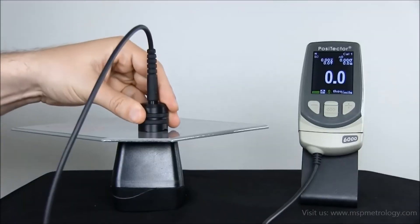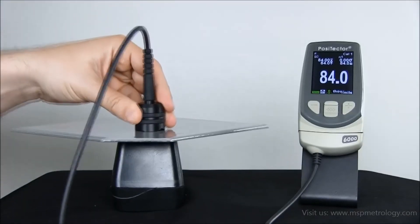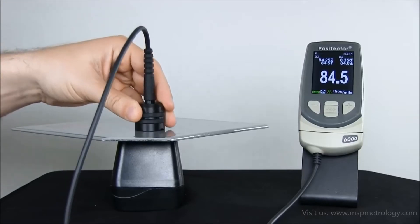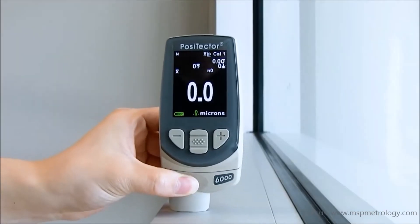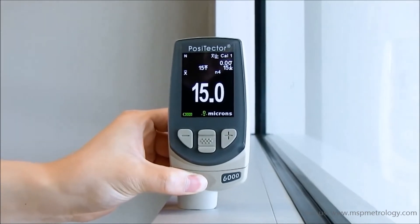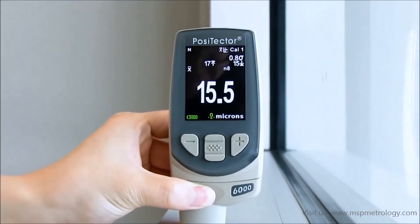All new Positector 6000 probe models feature faster measurement speeds and are compatible with the award-winning Positector platform. In addition to these faster speeds, Positector 6000 models now feature two new scanning modes.